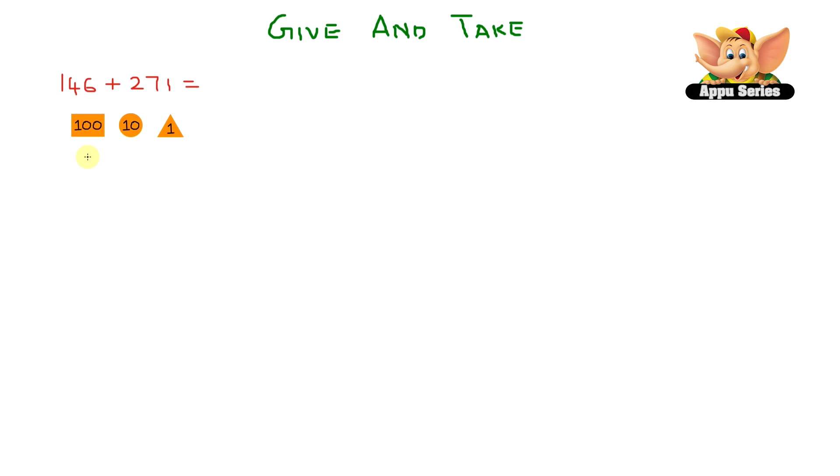And let's write 146 under this. So that's one hundreds, four tens, and six ones. Now let's write 271. So that's two hundreds, seven tens, and one ones.